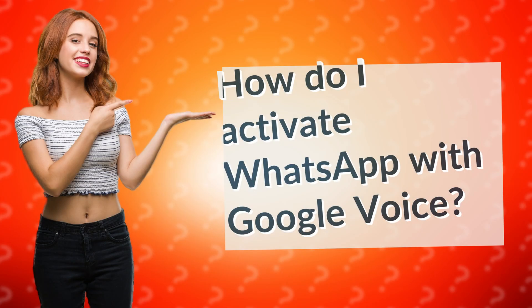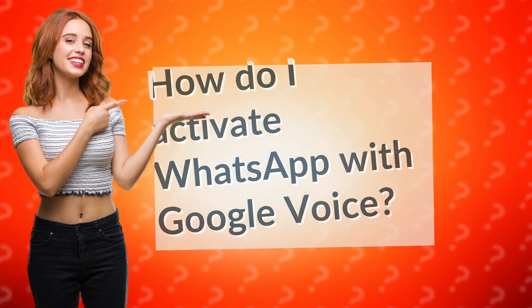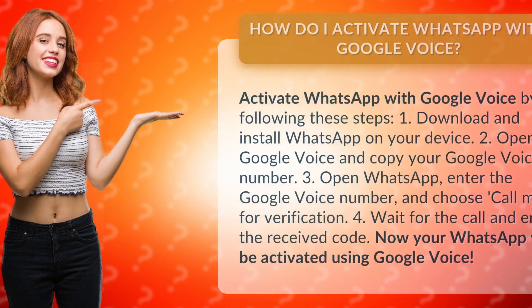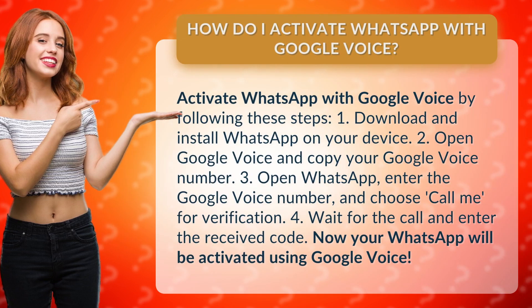How do I activate WhatsApp with Google Voice? Activate WhatsApp with Google Voice by following these steps. Step 1: Download and install WhatsApp on your device. Step 2: Open Google Voice and copy your Google Voice number.